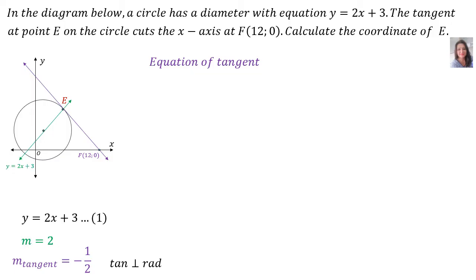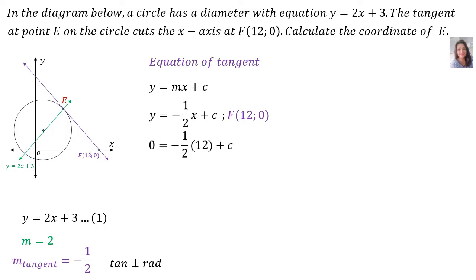What I did there was: if the gradient of the diameter is 2, for the tangent — swap number, swap sign — therefore the tangent's gradient is minus a half. Enter the equation y = mx + c. m's value is minus a half. Now to find c, we're looking for a coordinate that lives on the tangent, and there is one: it's the point F, (12, 0), the x-intercept. Substituting: 0 = -½ × 12 + c, which gives -6 + c, so c = 6. Therefore the equation of the tangent is y = -½x + 6. We label it equation number 2.